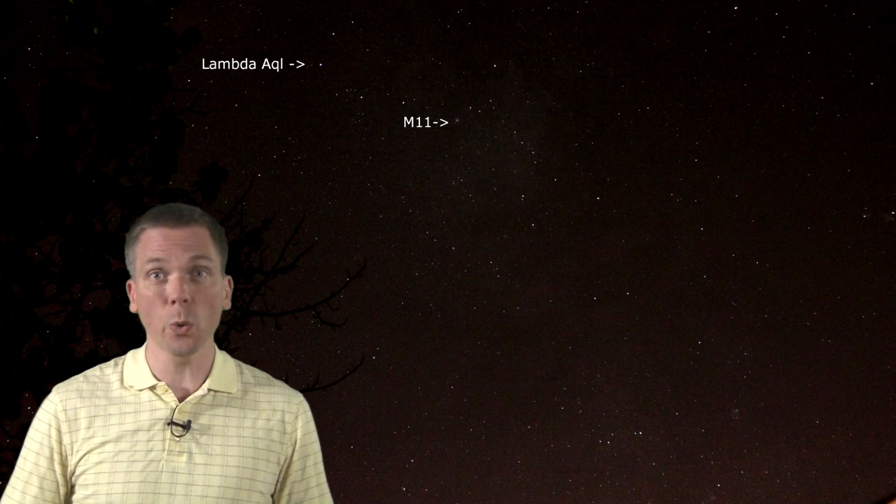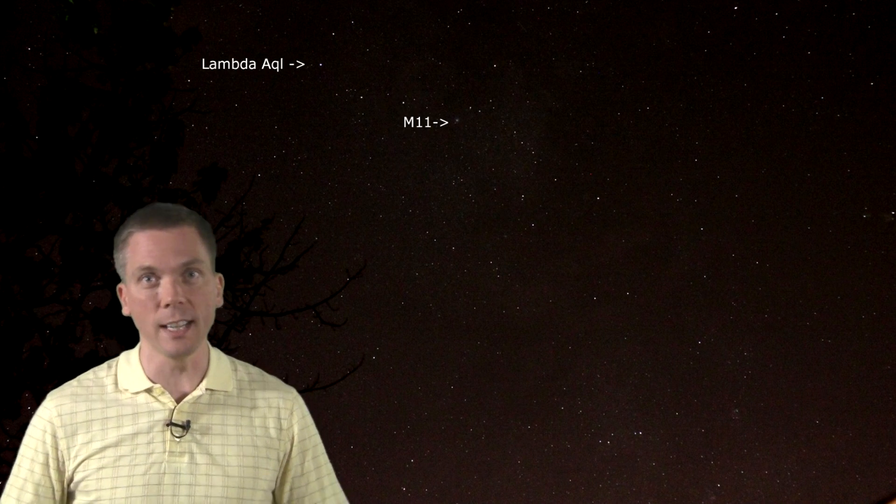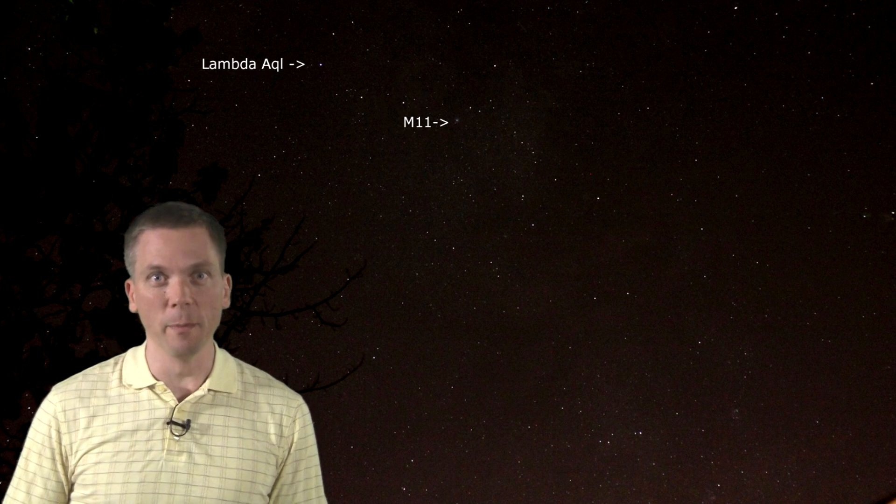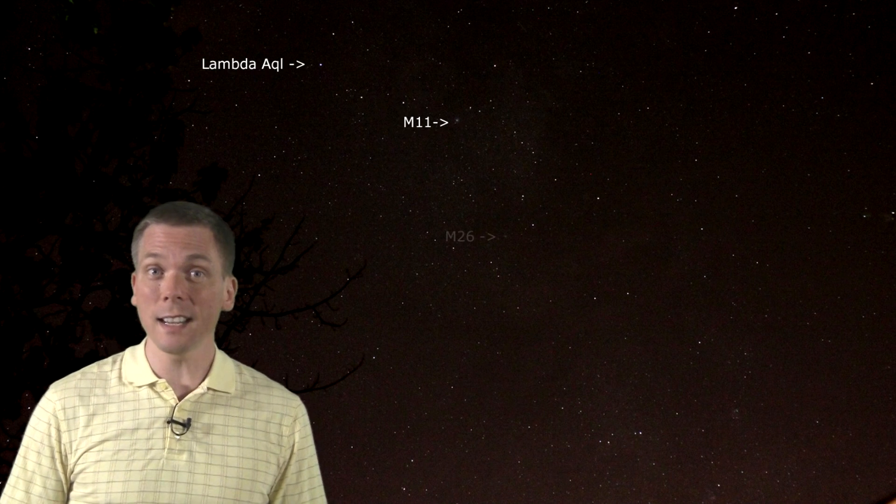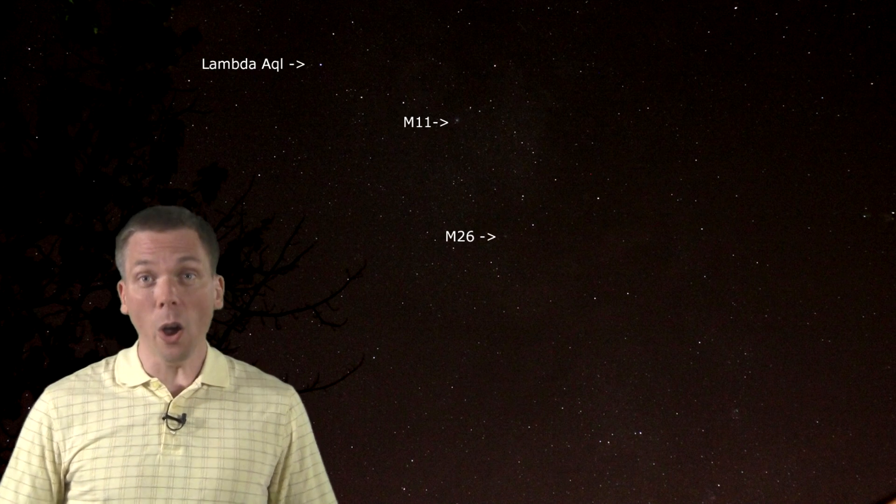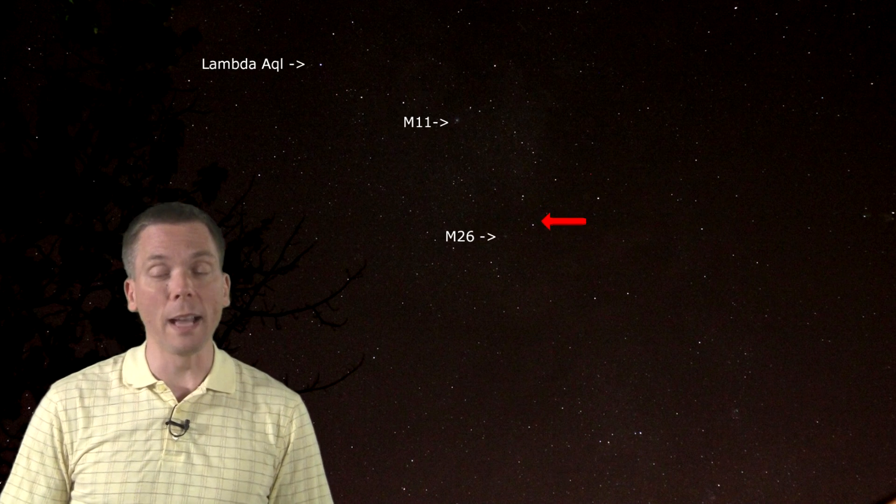And where Aquila got the short end of the deep sky object stick, Scutum is full of them, with the globular cluster M26 not far from M11, also near this pair of 5th magnitude stars.